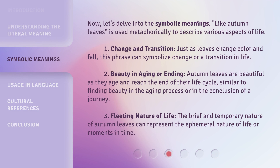Now, let's delve into the symbolic meanings. 'Like autumn leaves' is used metaphorically to describe various aspects of life. First, change and transition — just as leaves change color and fall, this phrase can symbolize change or a transition in life. Second, beauty and aging or ending — autumn leaves are beautiful as they age and reach the end of their life cycle, similar to finding beauty in the aging process or in the conclusion of a journey.